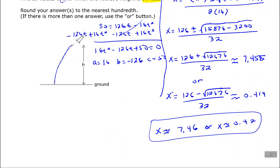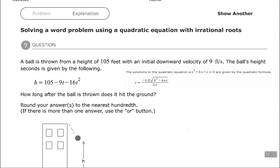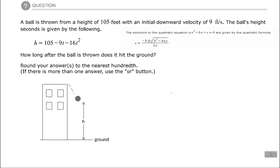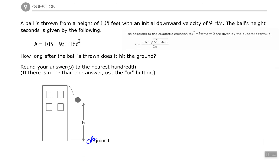Let's look at another word problem. We have a ball that is thrown from a height of 105 feet with an initial downward velocity of 9 feet per second — the 9 is already accounted for in the formula multiplied times t. The question asks how long after the ball is thrown does it hit the ground. If the ball hits the ground, that's at zero feet, so we replace the height with zero.